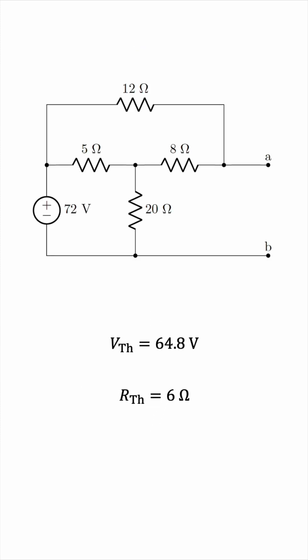The Thevenin resistance is 6 ohms. The Thevenin voltage, as we said earlier, is 64.8 volts, and this gives us the Thevenin equivalent of the circuit we started with, with respect to terminals A and B.